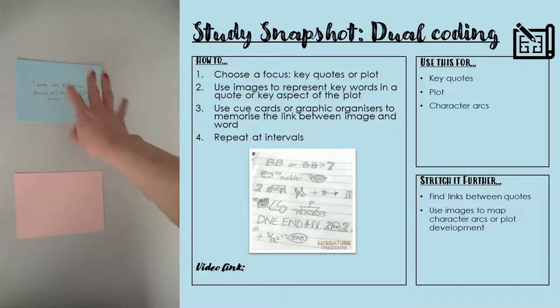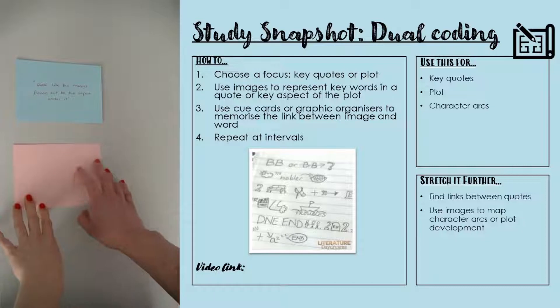What I need to do is rewrite these cue cards, but instead of writing it out, I'm going to use images to represent words or ideas. For example, I've got 'look like the innocent flower but be the serpent under it.'